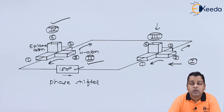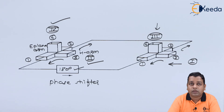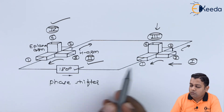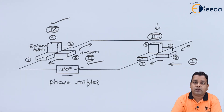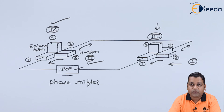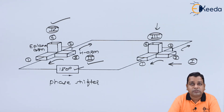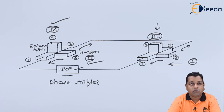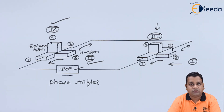In summary, the microwave circulator works on Faraday's rotation principle when constructed with ferrite material, but can equivalently be built using two magic Ts and a phase shifter. The next lecture will cover a practice problem based on this understanding. Thank you for learning microwave engineering — subscribe to the Ekida channel for more.